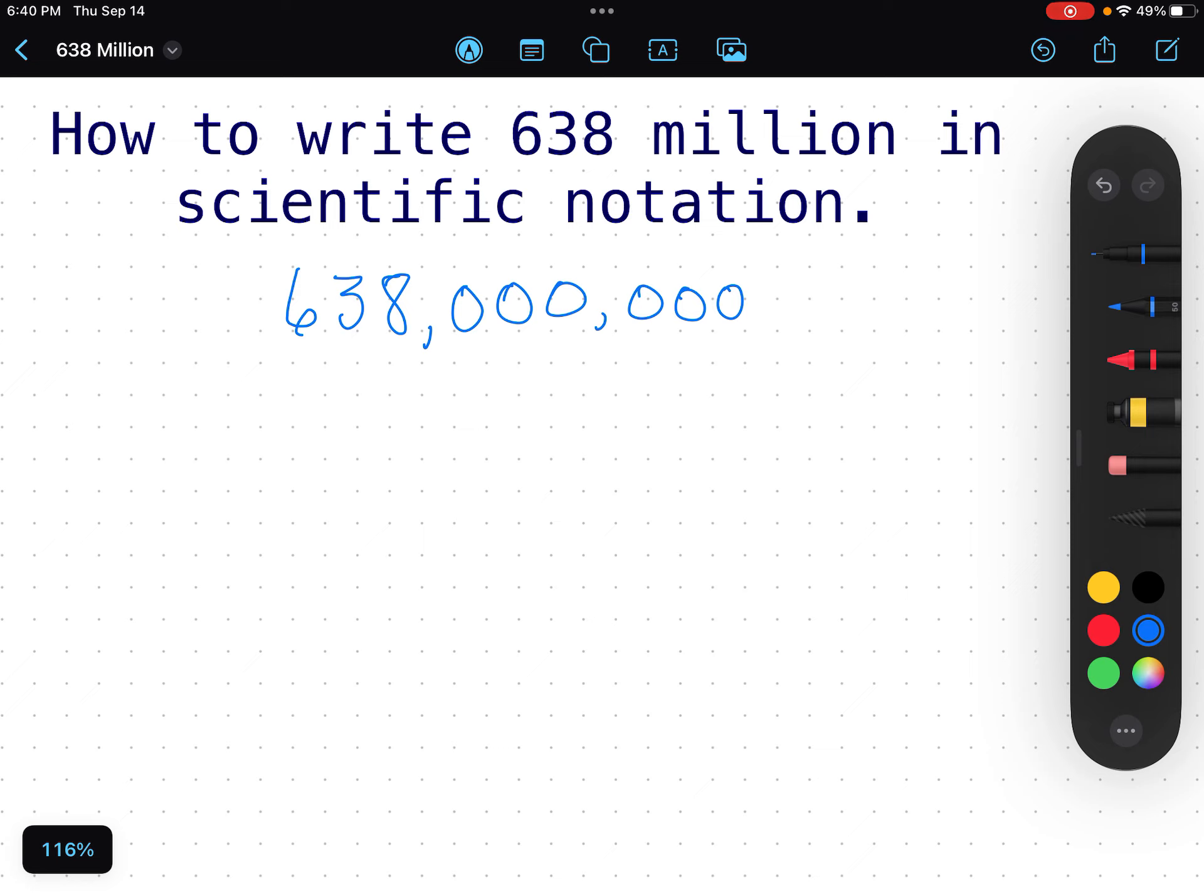The first part of the scientific notation needs to be some value between 1 and 10. And for us, that's going to be 6.38. 6.38 is between 1 and 10. I can't use 638 because it's not between 1 and 10. I can't use 63.8 because it's not between 1 and 10. I need 6.38.